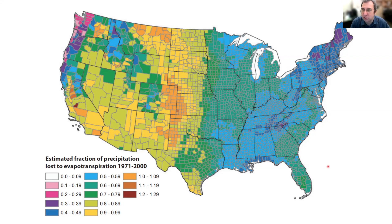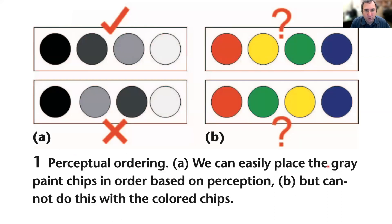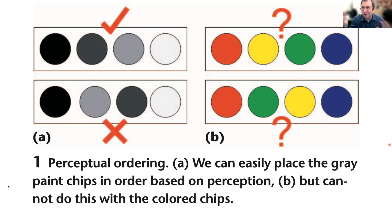One way around this is to use a color map that has a perceptual ordering. I showed two different rainbow maps on the right — it's not clear what order they're in. Is red higher than yellow? Is yellow between green? There's no obvious perceptual ordering.